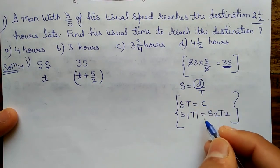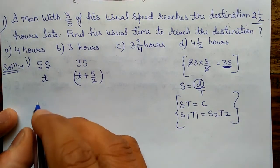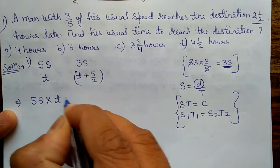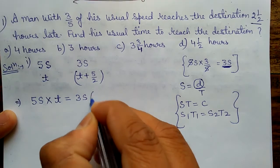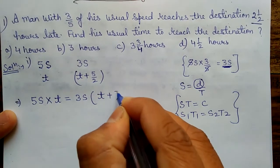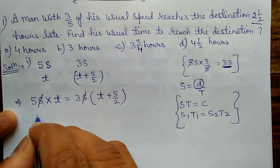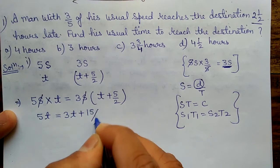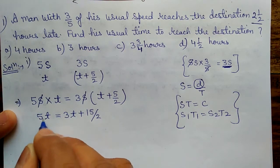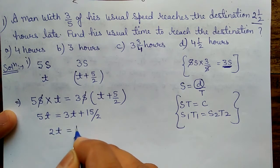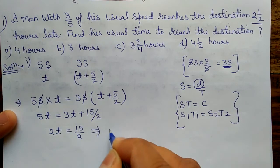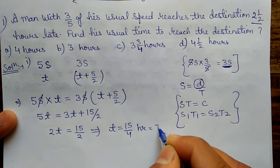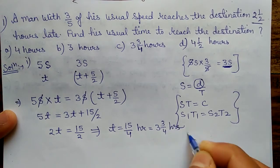If distance is constant, then s1×t1 = s2×t2. So: 5s × t = 3s × (t + 5/2). After cancelling s, we get 5t = 3t + 15/2. Therefore 5t − 3t = 2t = 15/2. That implies t = 15/4 hours, or 3 and 3/4 hours.